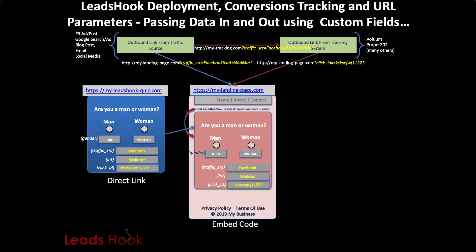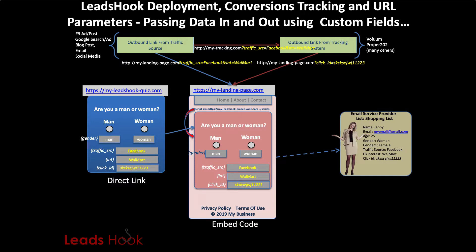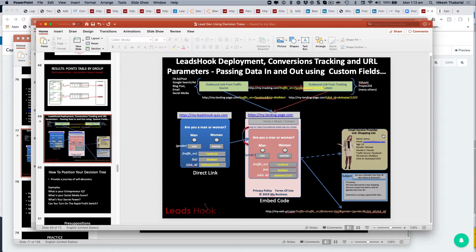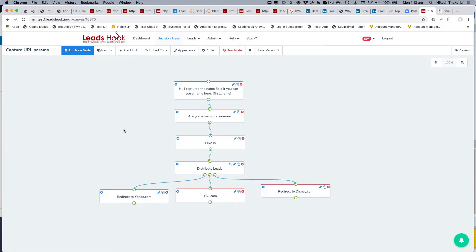The key thing to ensure is that these variables you're using are created as custom fields inside LeadsHook. I'll show that with a live example after a little more theory. The leads are captured, and that's basically how the campaign runs. In this example, Jenny ends up in a list called 'Shopping List' with details captured both from the decision tree and from the traffic source.